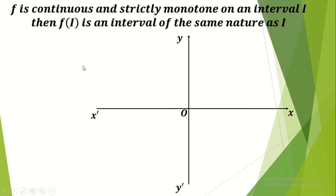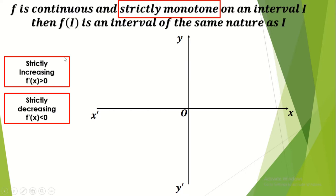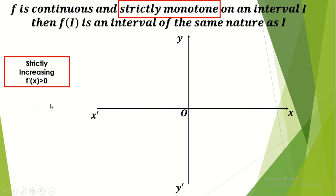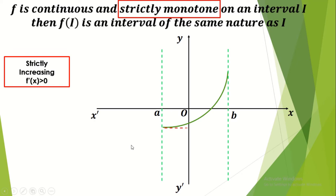Let's start with the properties of continuous functions. If we have f a continuous function and strictly monotone on an interval I, then f(I) will be an interval of the same nature as I. Let's recall what strictly monotone means: strictly increasing means f′(x) > 0, and strictly decreasing means f′(x) < 0. As you see, we have a function that is continuous on an interval [a, b] and is strictly increasing.